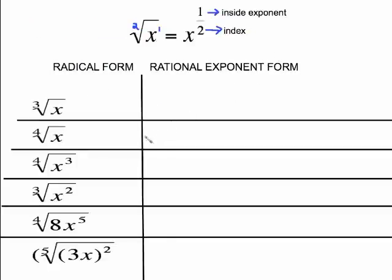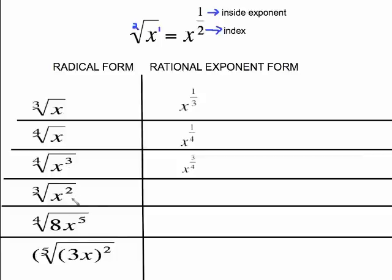Let's do a couple of practice problems converting from radical form to rational exponent form. The cube root of x is the same as the cube root of x to the first, which gives us x to the 1/3. The 4th root of x is like the 4th root of x to the first — x to the 1/4. If there's already a power on the inside, like the 4th root of x cubed, that is x to the 3/4. The next is x to the 2/3.